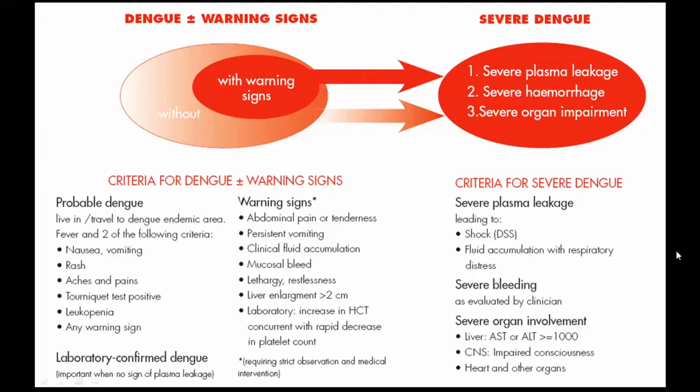Severe Dengue is associated with three phenomena: severe plasma leakage, severe hemorrhage, or severe organ impairment. These can be indicated in the form of shock, fluid accumulation with respiratory distress, severe bleeding, or altered liver function tests where SGPT and SGOT are greater than 1,000, impaired consciousness level, and heart and other organ failure.